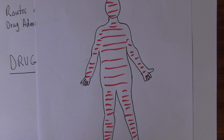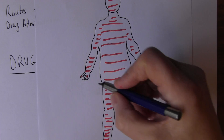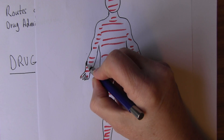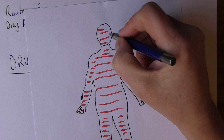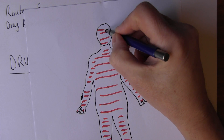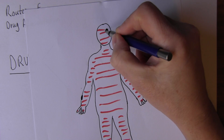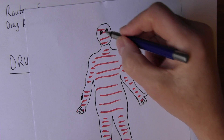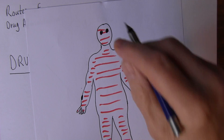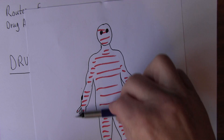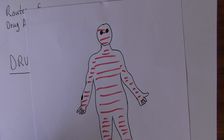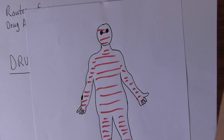But a drug that we give locally will only affect one part of the body — only get to that one area, wherever that particular area happens to be. It could be an eye, for example. It's a local administration. So systemic means all over, all body systems.